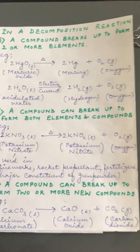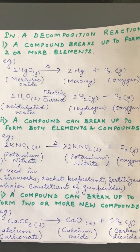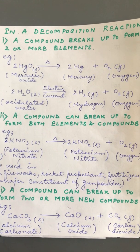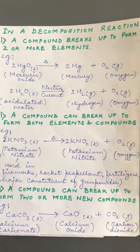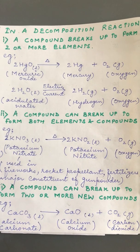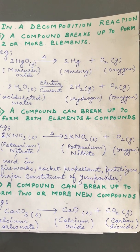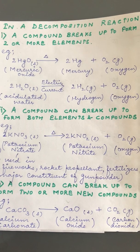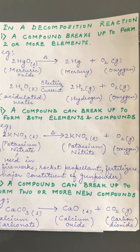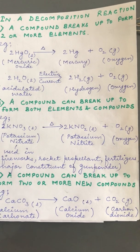In a decomposition reaction, a compound can break up to form two or more elements. For example, mercury oxide HgO on being heated forms mercury and oxygen — one compound breaking into two elements. Water, when acidified and electric current is passed through it, breaks up into hydrogen and oxygen. Note that pure water is not a good conductor of electricity and will not split up; only acid-treated water will undergo this decomposition.